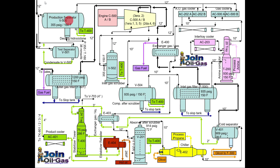All the water separated in the production separator is sent to the de-oiling section to remove any traces of hydrocarbons or oil that may be flowing with the water. All the condensate separated here is sent to the condensate stabilizer, shown here in green, which we will discuss later. Now let's look at the gas flow.